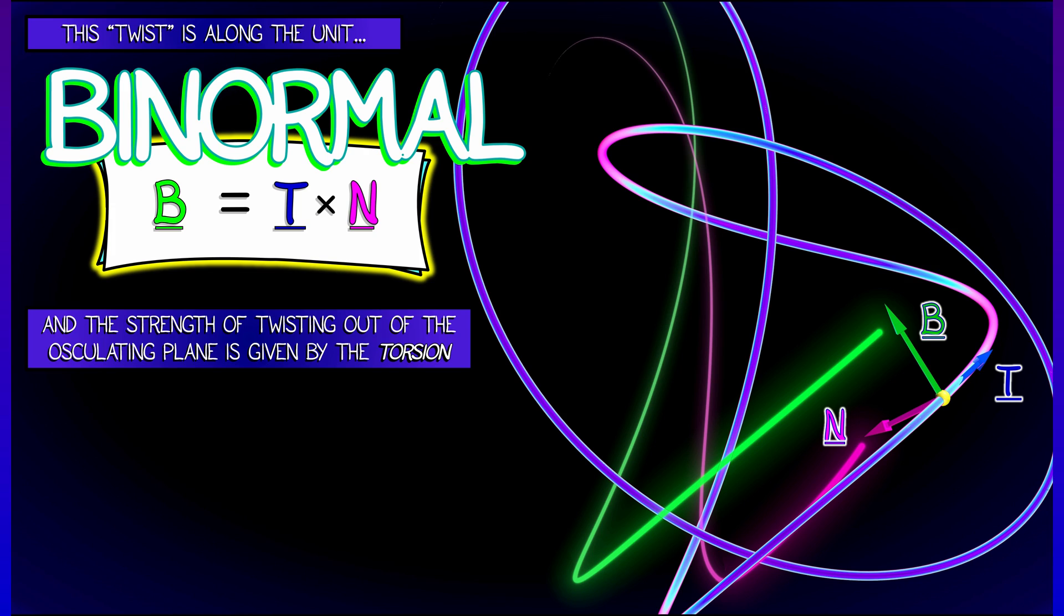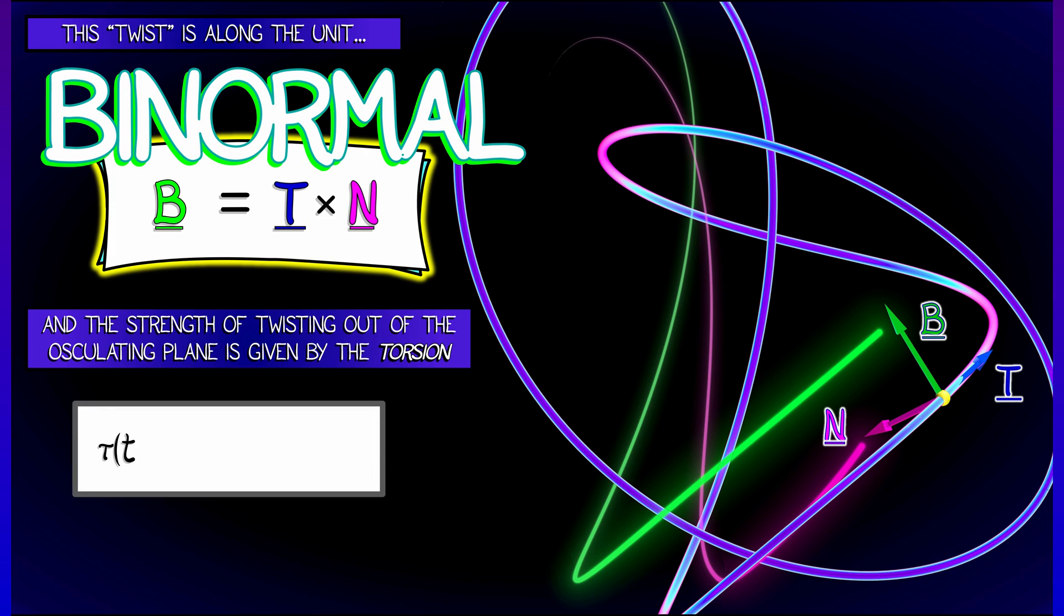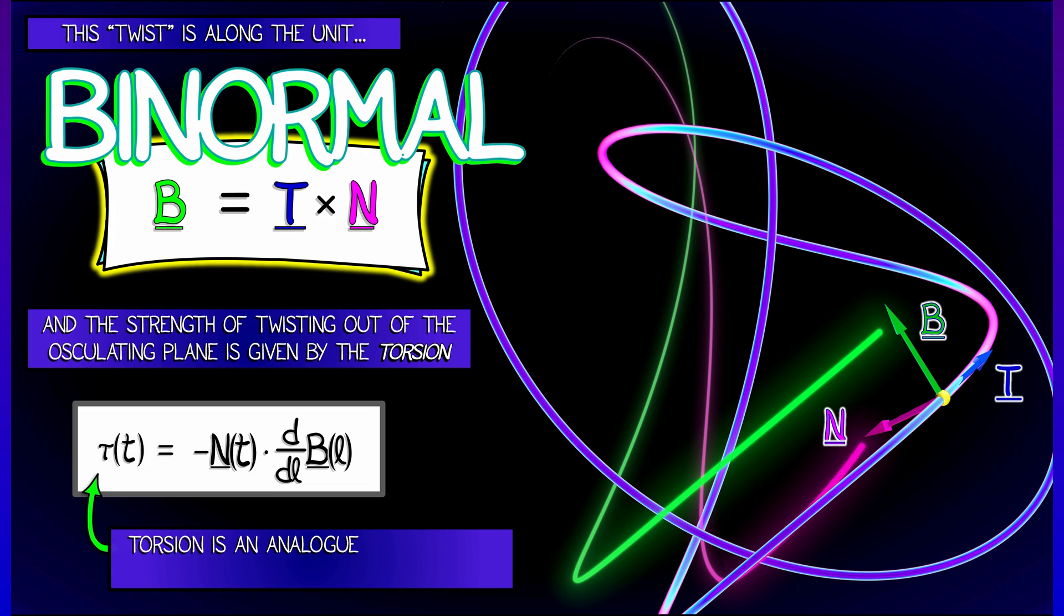Now when your curve twists out of the osculating plane, that twist occurs with some strength. That coefficient is denoted tau and is called the torsion. If you want a definition for torsion, tau is a function of time t. It can be described in terms of the rate of change of the binormal vector with respect to arc length, dotted with the unit normal vector and then with the minus sign in front of it for somewhat anomalous historical reasons.